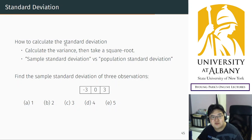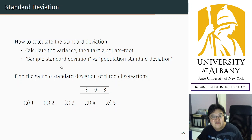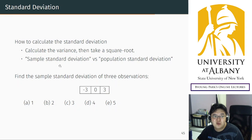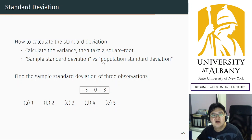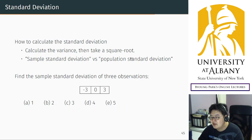Before thinking about that, I should mention: there are two formulas for standard deviation. If you use the sample variance formula, the resulting standard deviation is called the sample standard deviation. If you use the population variance formula, the resulting is the population standard deviation. It's intuitive — nothing new.